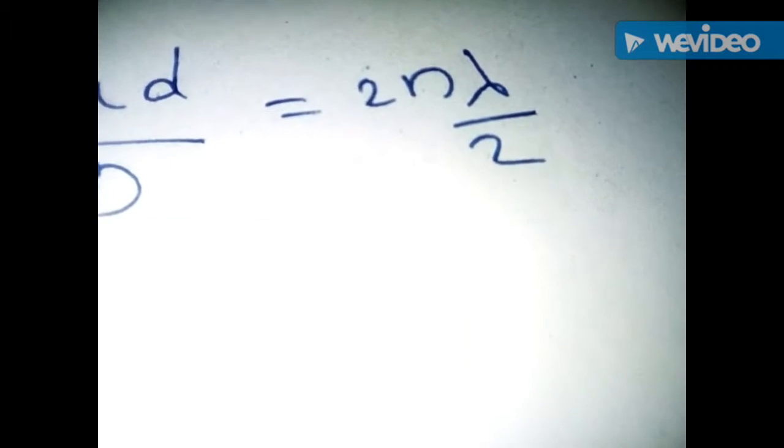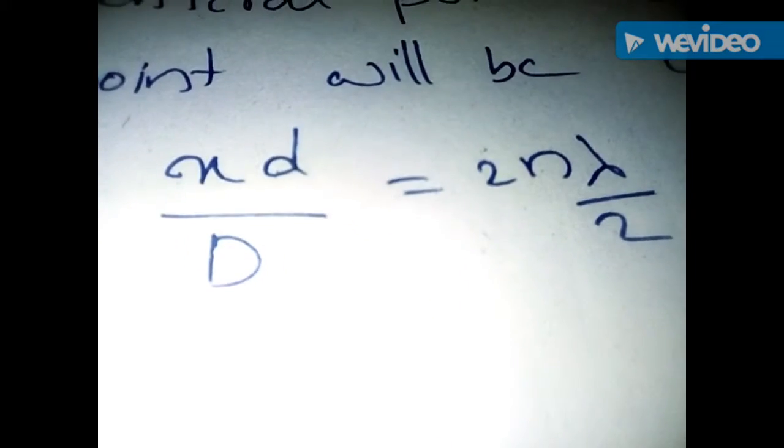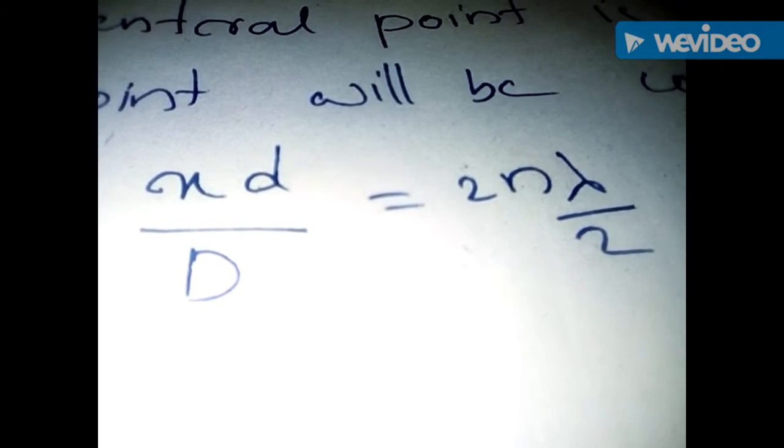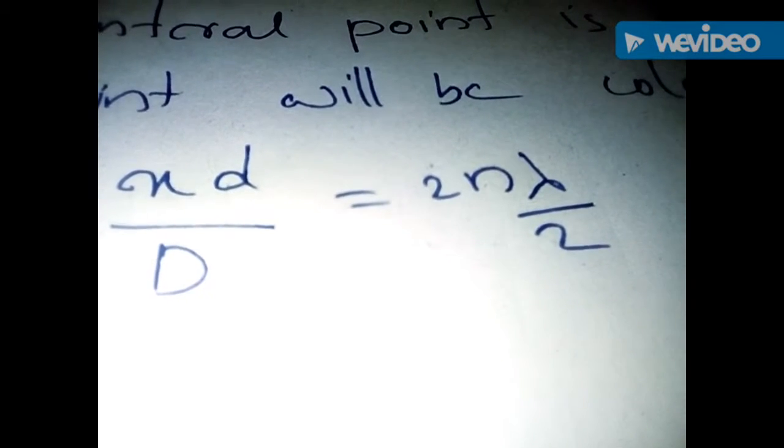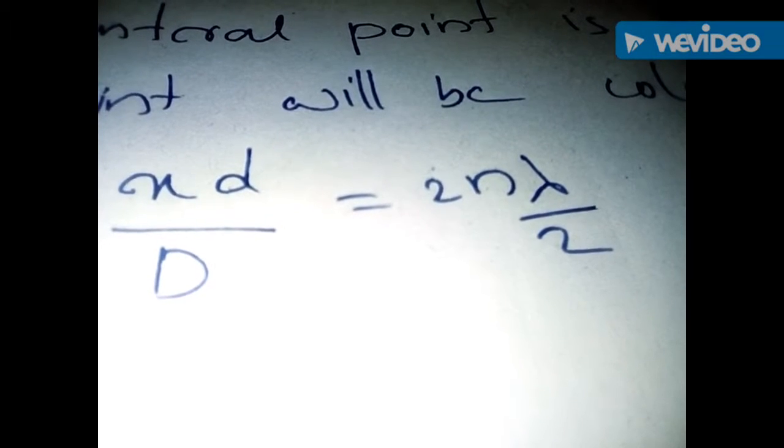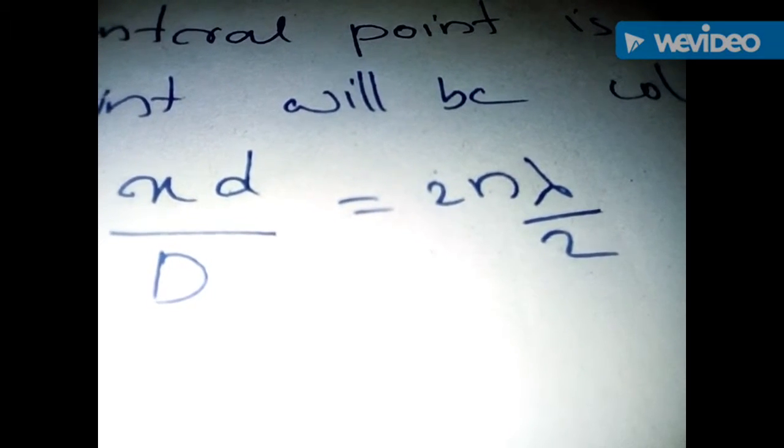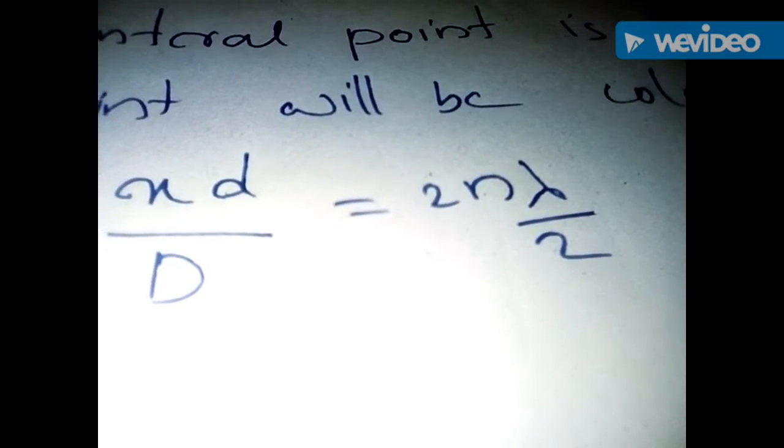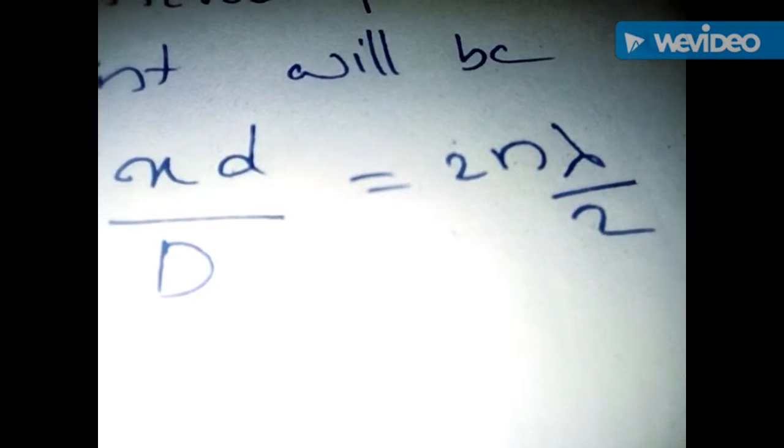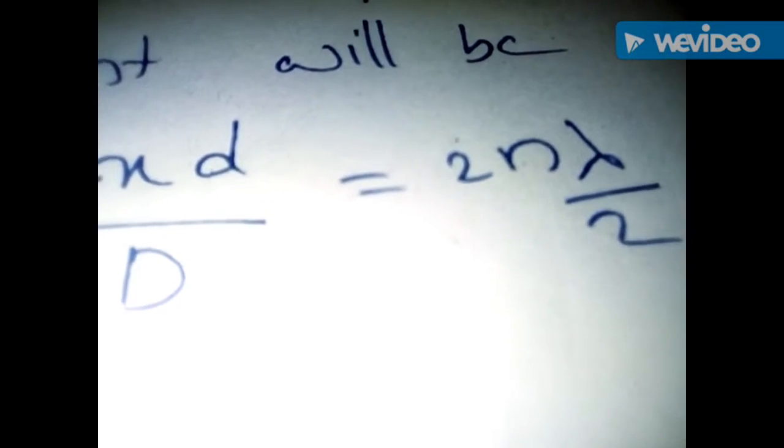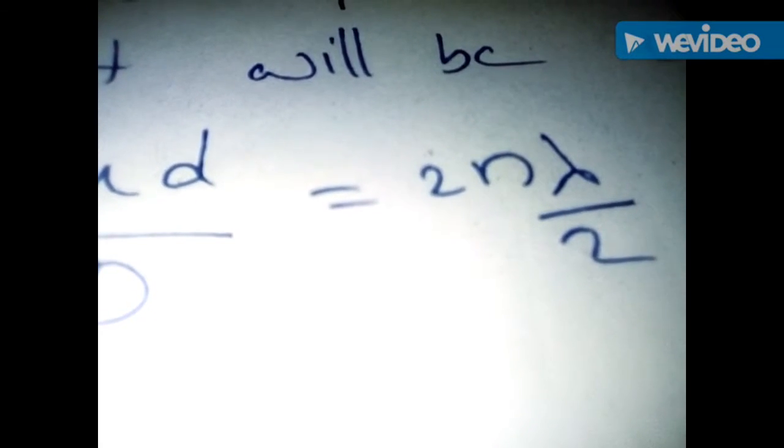White light consists of many waves having different frequencies and different wavelengths. Please look at this equation. There is a component of lambda. Lambda is the wavelength of waves, which is different for different waves.